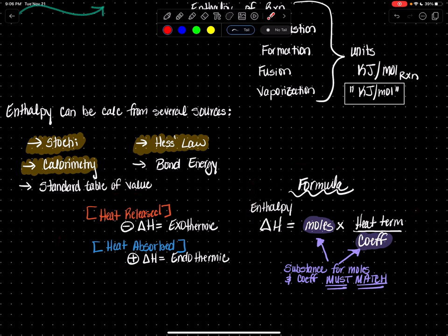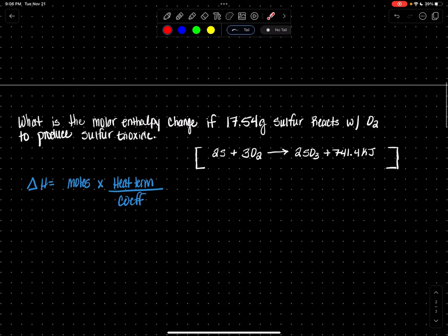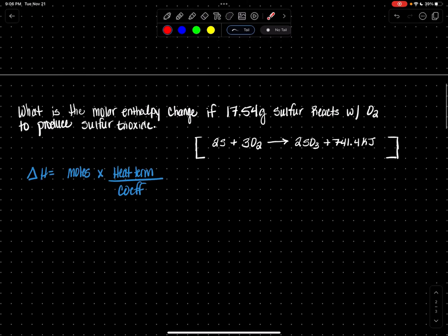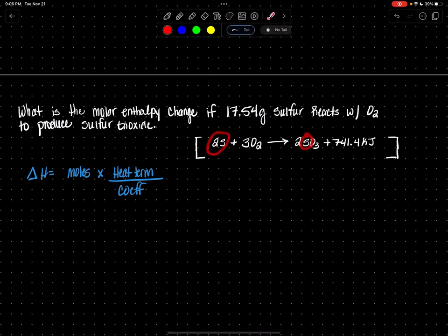Let's put those frameworks to use. What is the molar enthalpy change if 17.54 grams of sulfur reacts with oxygen to produce sulfur trioxide? I have the standard chemical equation here. Let me quickly check for balancing — two S's on each side, six oxygens on each side. All my elements are in sync.